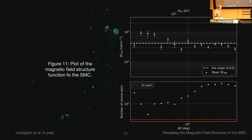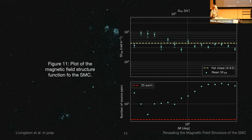In previous papers on other RM structure functions, sometimes you see power on the large scales, and we do not see that power here. What this tells us is that the large-scale magnetic field of the SMC isn't varying spatially on those scales.